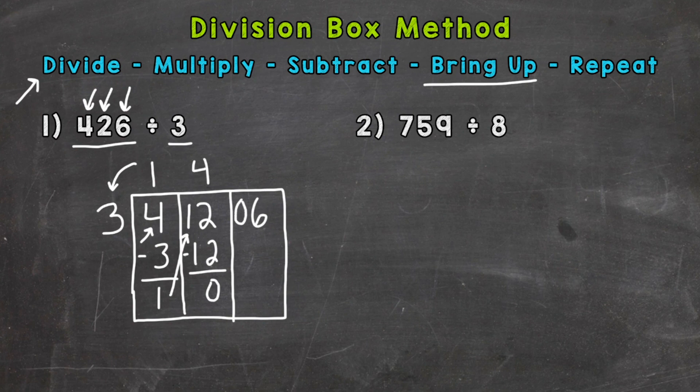So we have a 6 over there. So 6 divided by 3. How many whole groups of 3 out of 6? Well 2. 2 times 3 is 6. Subtract. And we get 0. So we do not have a remainder. That worked out perfectly there. And we get 142.